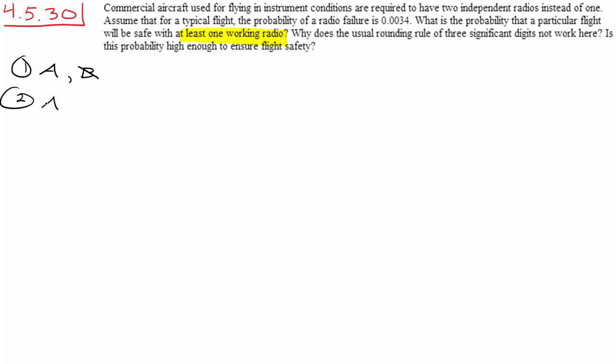Case 2, you have to figure out the probability that A is bad and B is good. And then Case 3, you have to figure out the probability that they are both working, because those all satisfy at least one working radio. And then the only case that's left is both of them are bad, both of them fail.